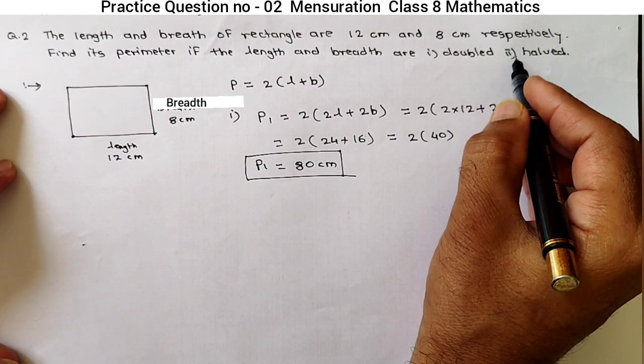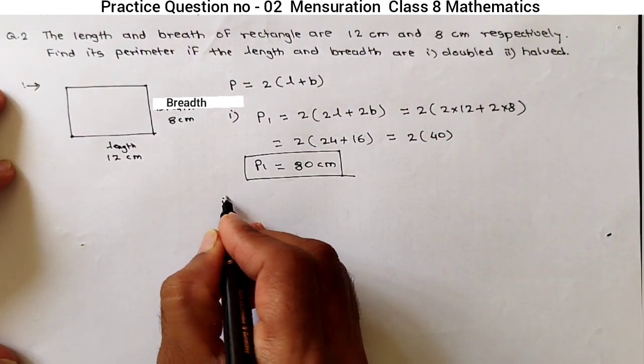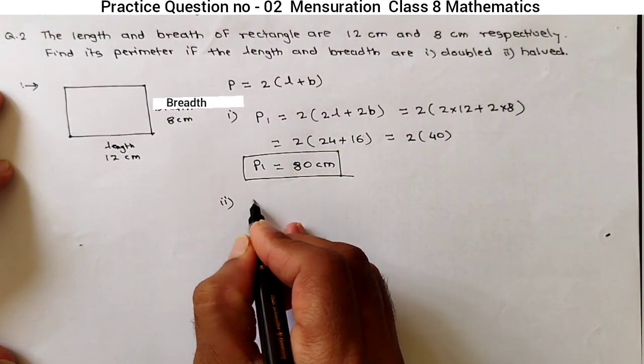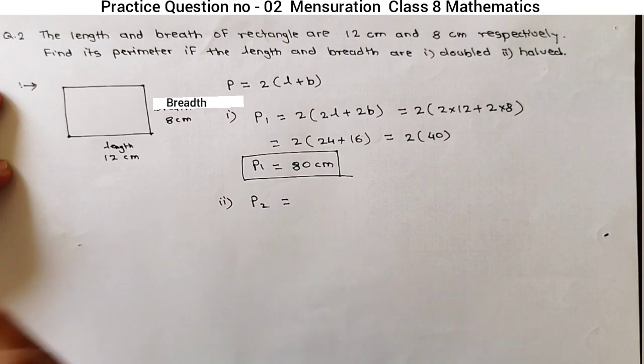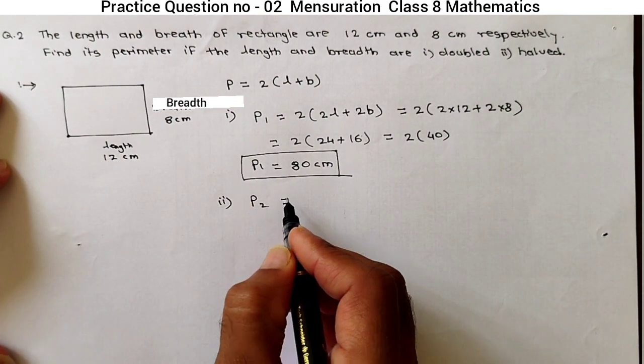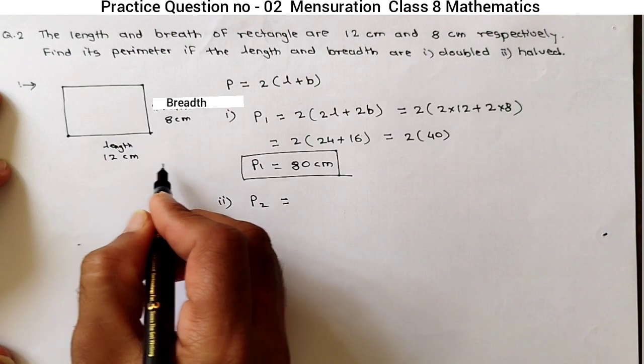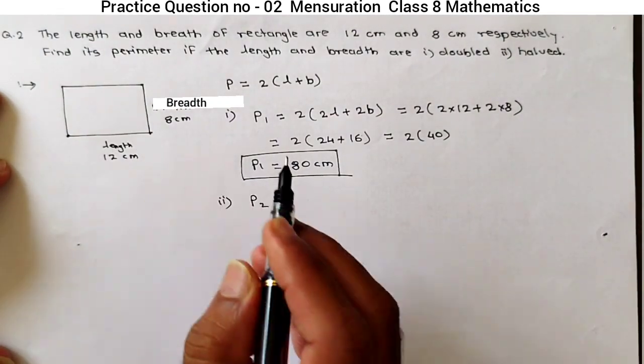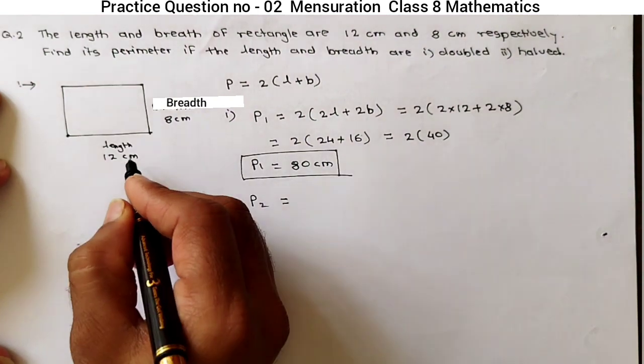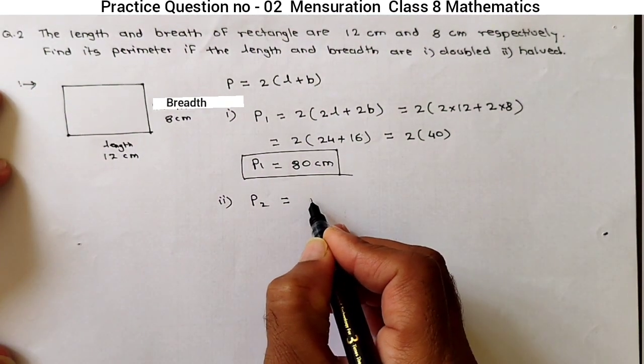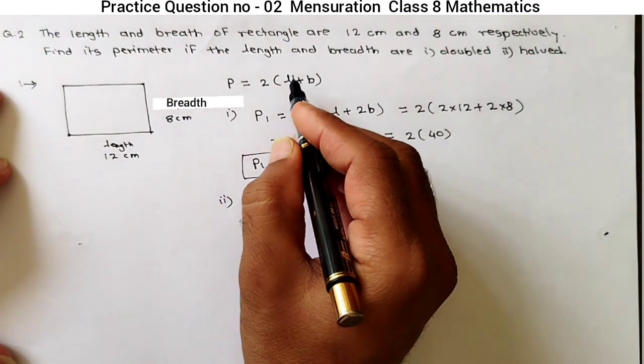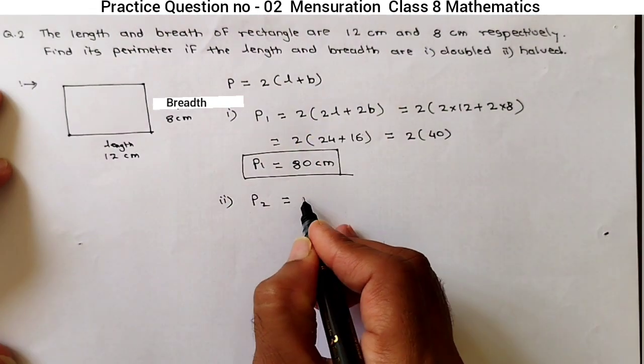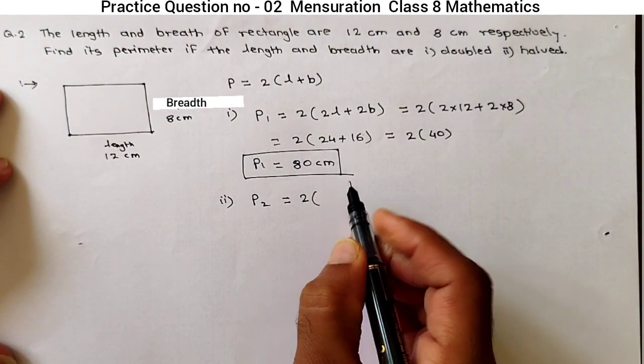Now, in the second case, what is given? Both are half. So, let's see P2, perimeter for the second condition. In first condition, length is doubled, and in second condition, length is half. Formula is same. 2 into bracket L plus B.